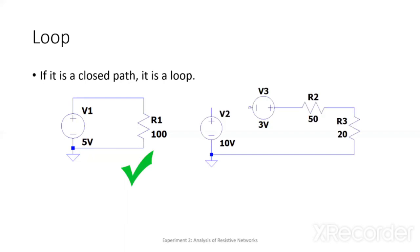For this one, V2 and V3, they are not connected on this part. It's not continuous, therefore it is not a loop. If it's a closed path, it is a loop.